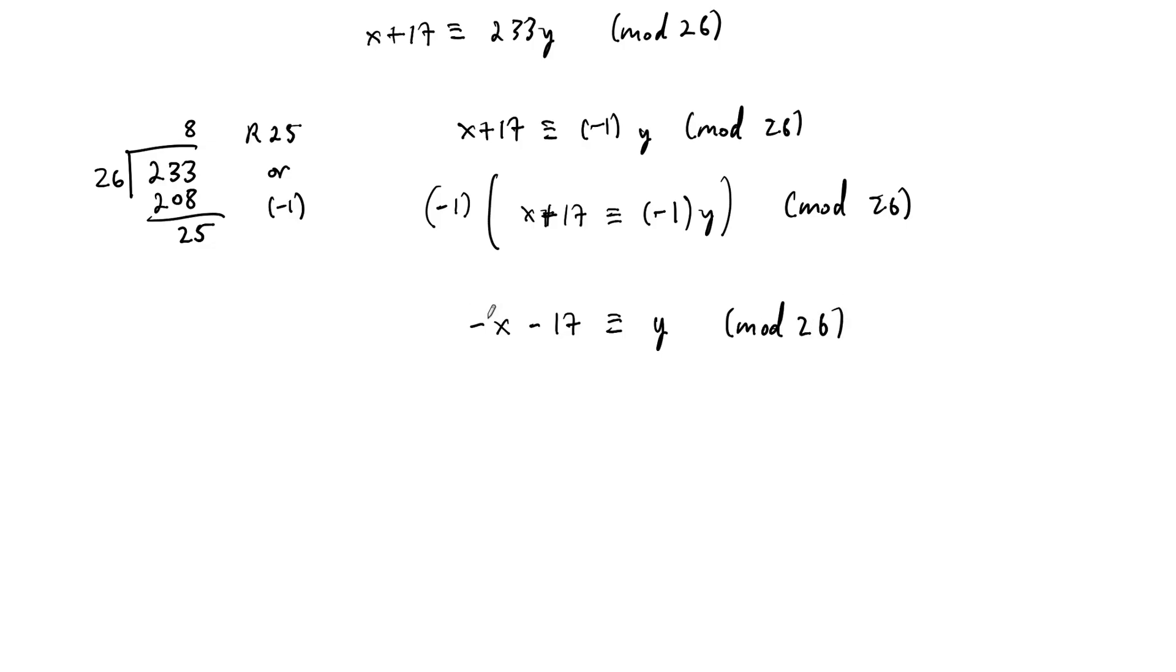But I'm going to write this as negative 1 and put back in the variables mod 26. The numbers mod 26. So this is going to become 25x. And then adding 26 to this one is going to give us 9. So plus 9 is congruent to y, mod 26.